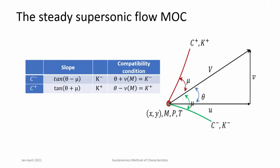The sum total of what was done in the last class was: if you consider any general point in the flow field at any x and y having a certain Mach number, pressure, and temperature — it is an isentropic flow — you find it has a certain direction with angle theta. There are two characteristics associated with this point. The C plus characteristic has slope tan(theta plus mu), and along it the compatibility condition theta minus nu, the Prandtl-Meyer angle nu(M), is constant.